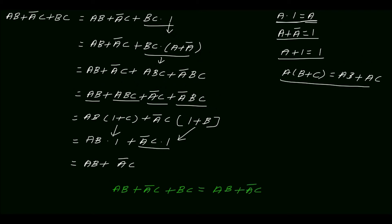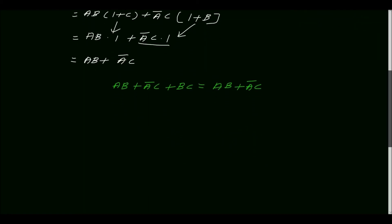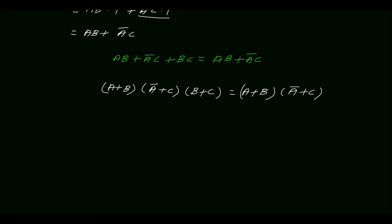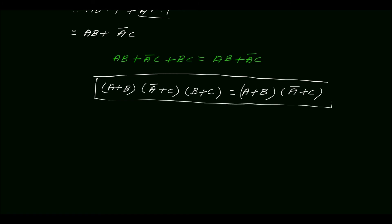With this we have proved the consensus theorem. Next we will write the dual of the consensus theorem — just change OR into AND and AND into OR. So the dual of the consensus theorem is: (A + B)·(A' + C)·(B + C) = (A + B)·(A' + C).